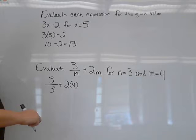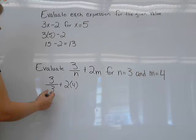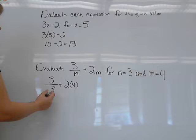Because remember, if the variable and number are right next to each other, they're being multiplied. So 3 divided by 3 gives me 1, plus 2 times 4 is 8. Then 1 plus 8 is 9.